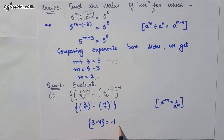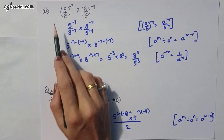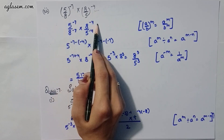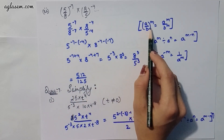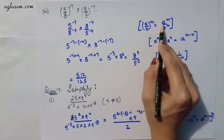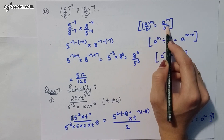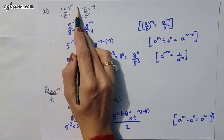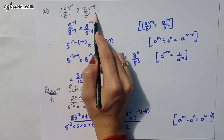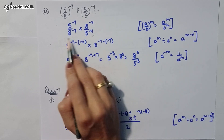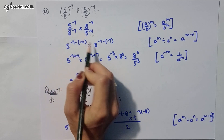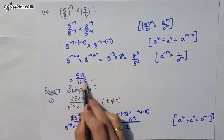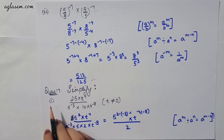Moving to the second part: (5/8)^(-7) × (8/5)^(-4). Applying the formula (a/b)^m = a^m / b^m, this gives 5^(-7) / 8^(-7) × 8^(-4) / 5^(-4). Taking 5 and 8 as common bases and combining exponents, the answer is 512 / 125.